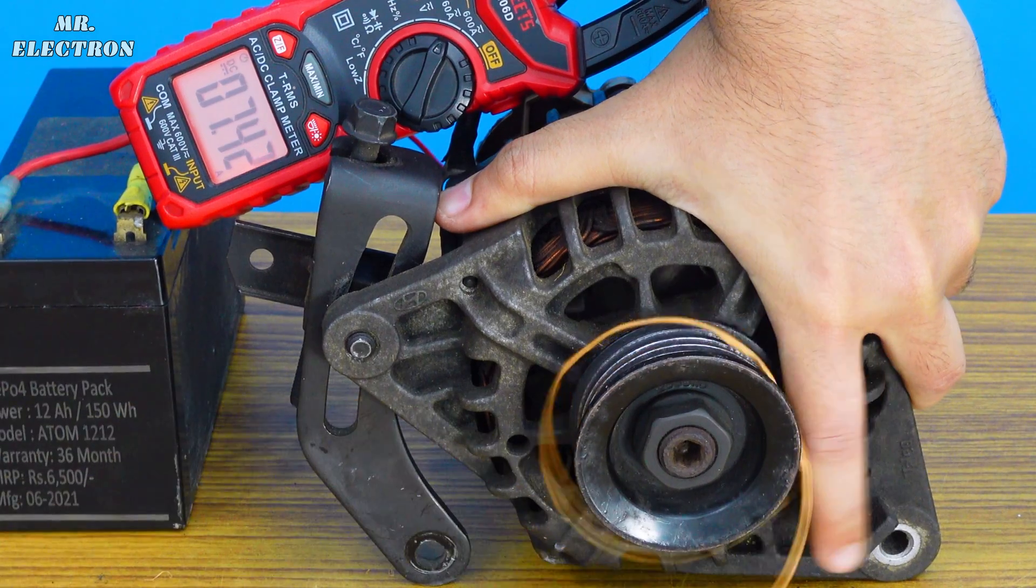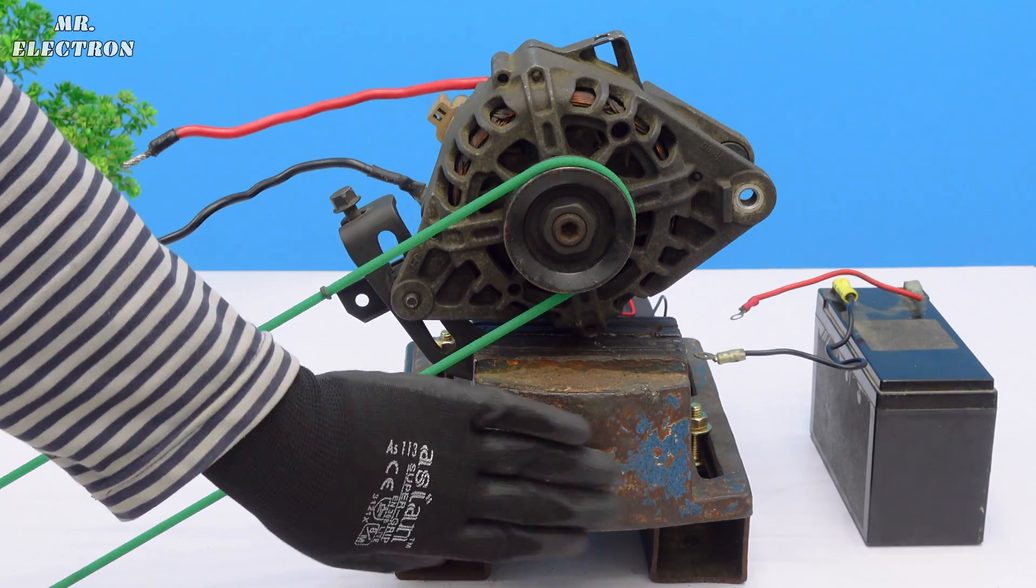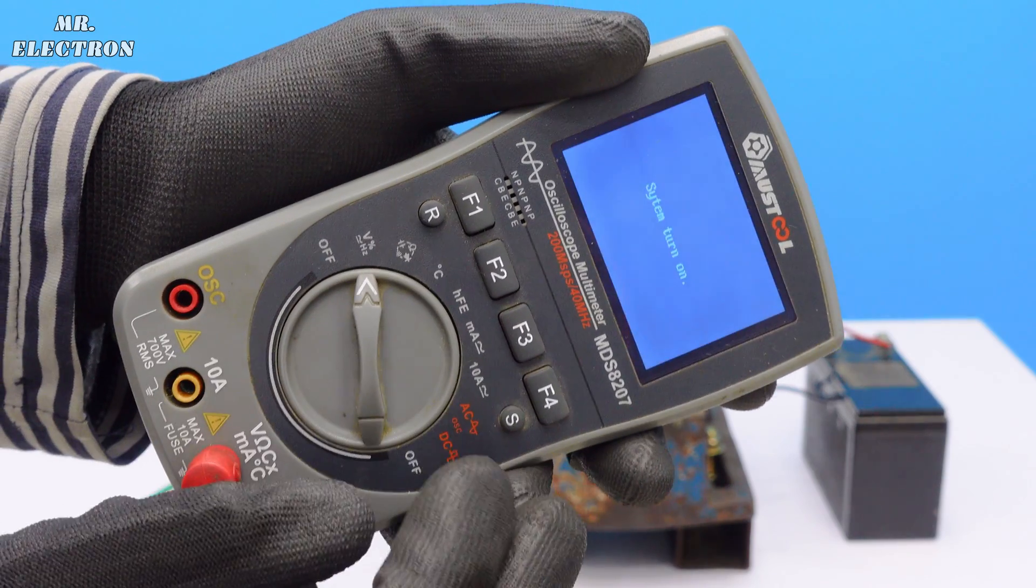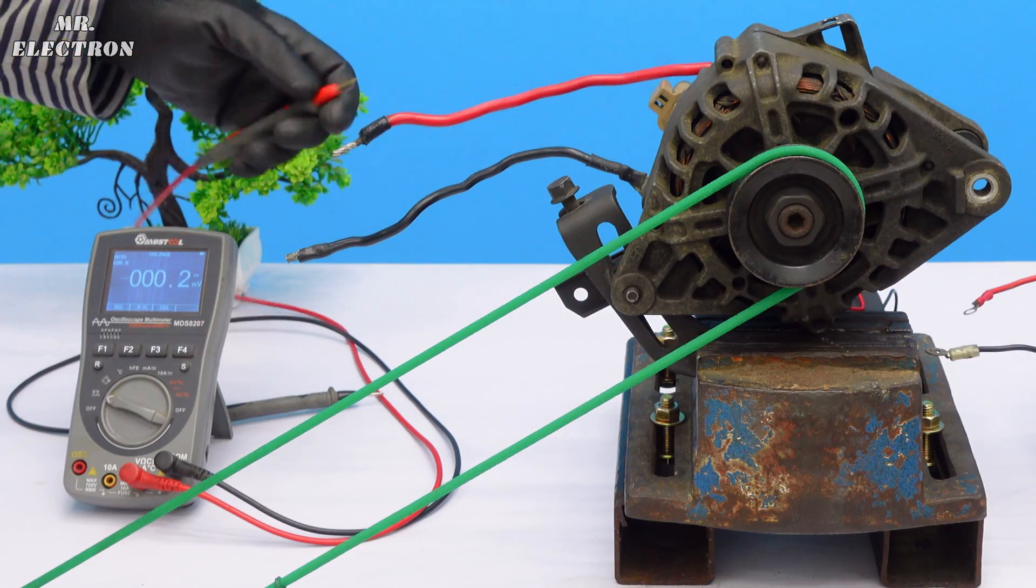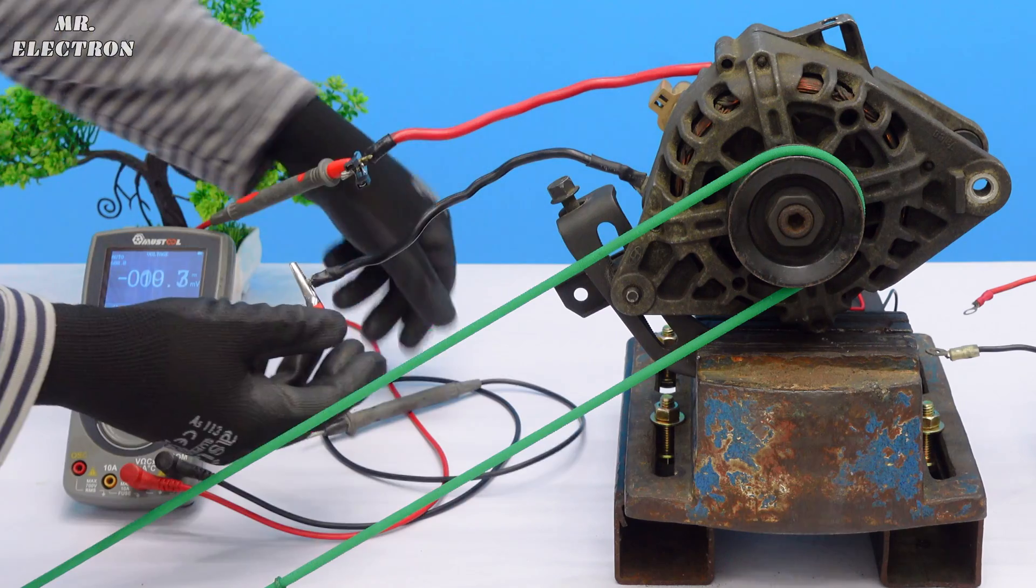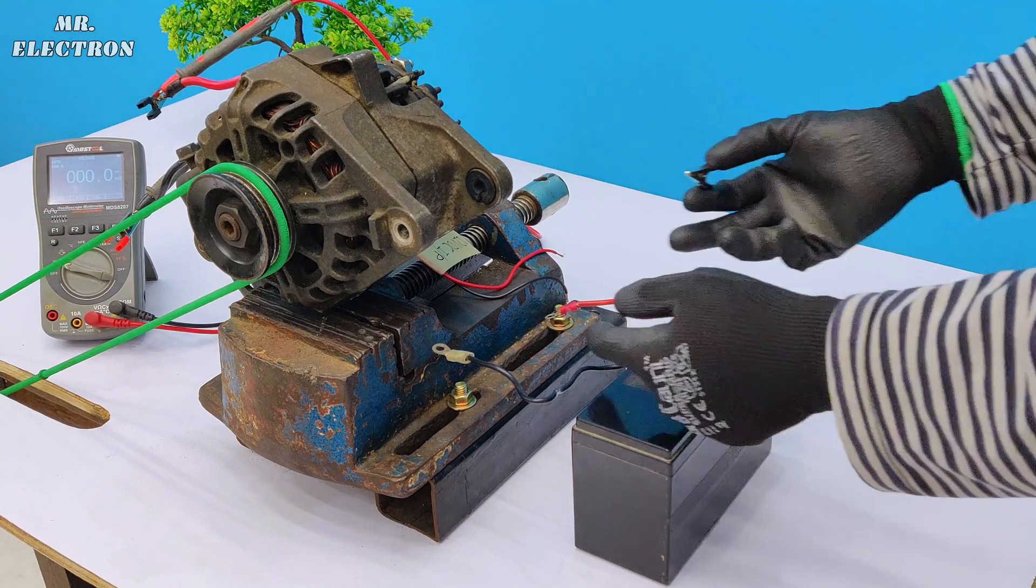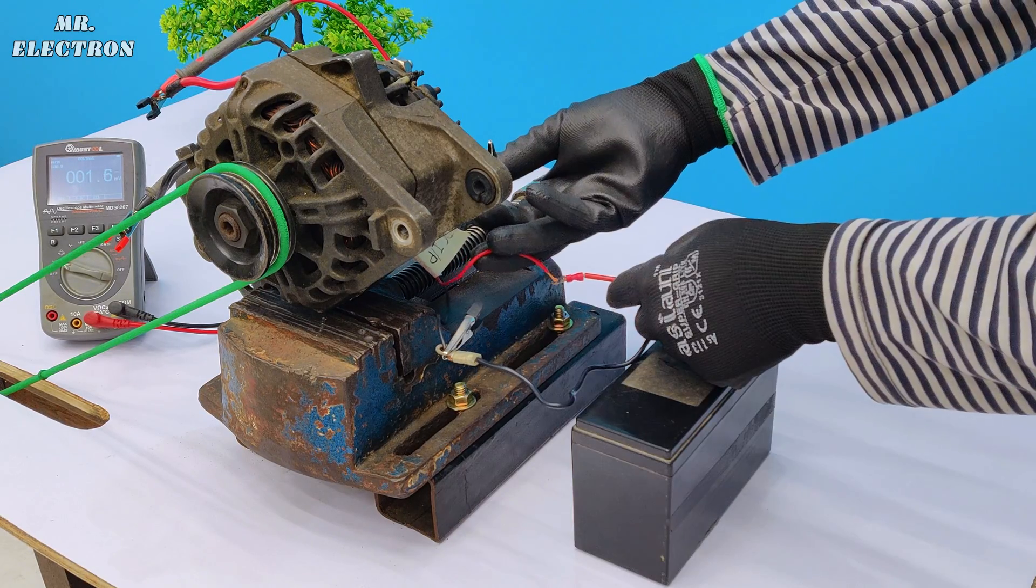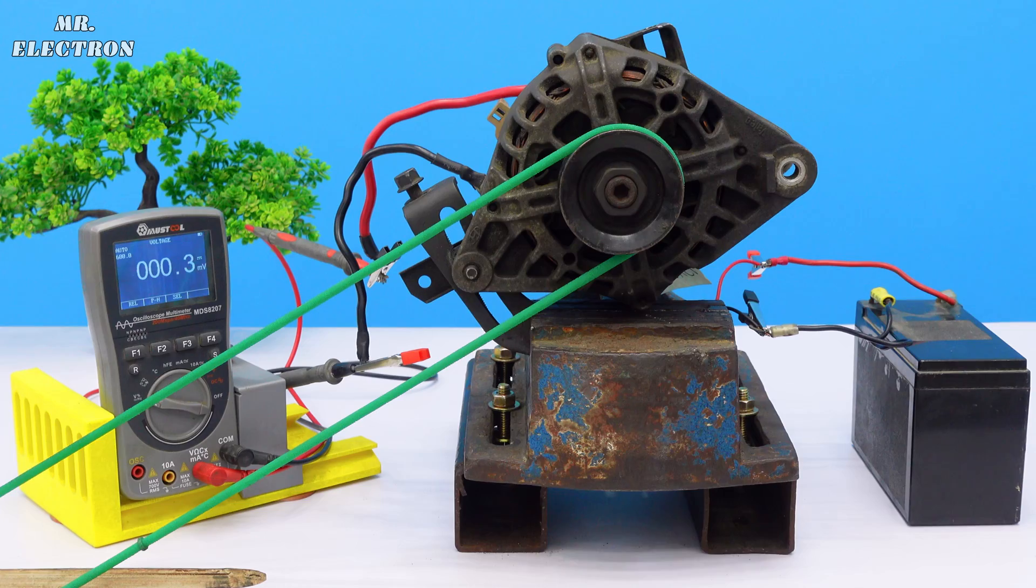Here I have installed my alternator on this vice, and to the pulley of the alternator I have connected this belt. Starting with the voltage measurement, this is voltage and we have zero volts here. Let's connect the meter wires to the output of the alternator, positive to positive, negative to negative. Now it is time to connect the battery wires to the alternator, black to black and red to red. All the connections are complete, and now it is time to start the test. Okay, go.